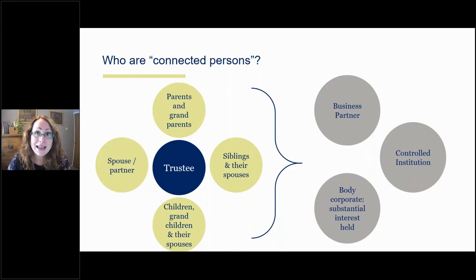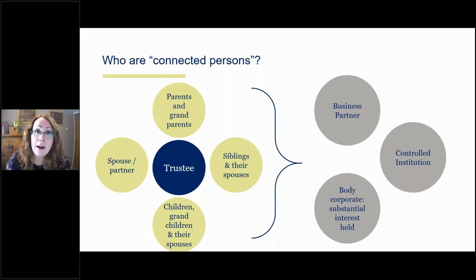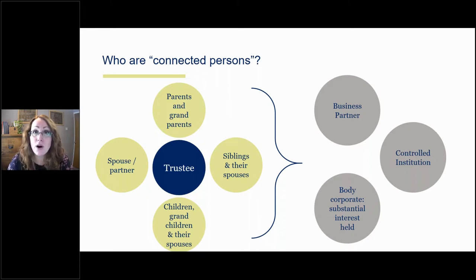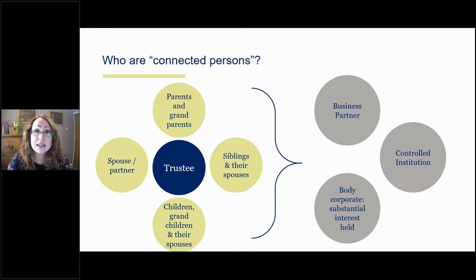Looking at the Section 188 definition — the most common one that applies where there is a benefit to a trustee or connected person — we start with your family: parents and grandparents, children and grandchildren, brothers and sisters and their spouses or partners, and your own spouse or partner. When we talk about spouses and partners, we mean people you're married to or in a civil partnership with, or people you are living with in that capacity even if you're not married. For children, we're also talking about stepchildren — people living with you as dependents. And when looking at spouses of children and spouses of siblings, the same principles apply as they do to your own spouse and partner. So broadly, that is what we're looking at in terms of family.